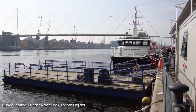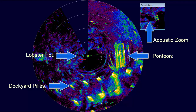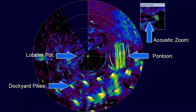The second log data file shows data captured in London's Queen Victoria Dock, using the Seaking DST V6 mechanically scanning imaging sonar. Here, Tritec Seaking is shown giving an image of the pontoon, the pile supporting the dock side, and the acoustic zoom tool showing a lobster pot dropped into the dock to give a strong sonar target. This also demonstrates the resolution of the CHIRP sonar.